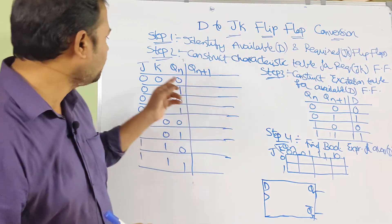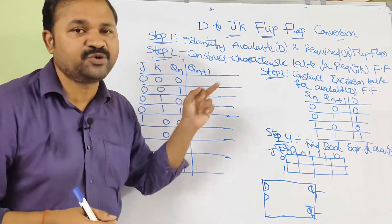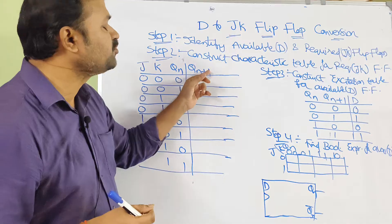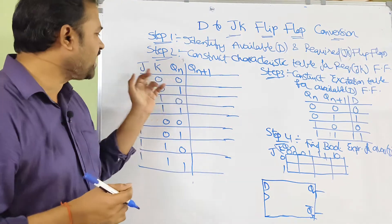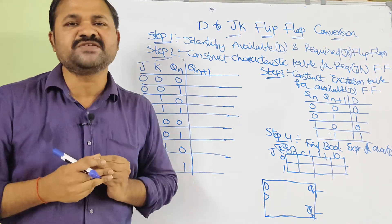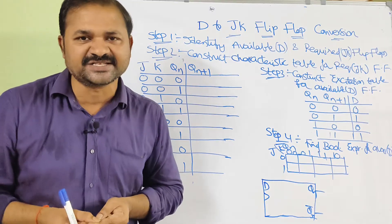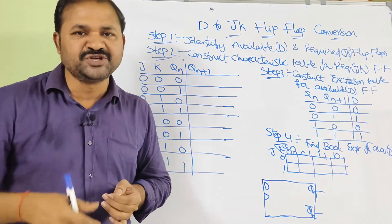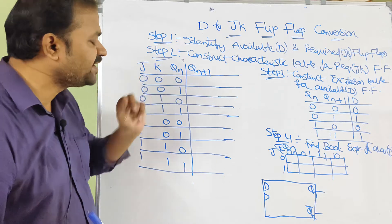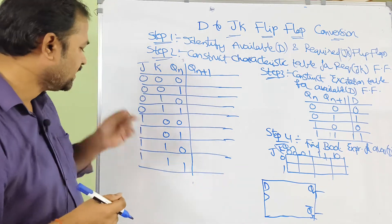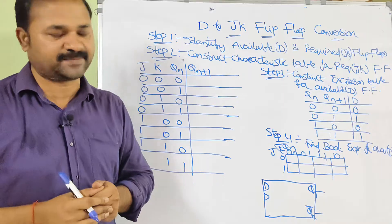Here we have 3 inputs — J, K, and Qn — and the output is Qn+1. With 3 inputs, we will have 2³ = 8 combinations, from 0 to 7. So decimal 0 in binary notation is 0,0,0, and likewise 7 in binary notation is 1,1,1.